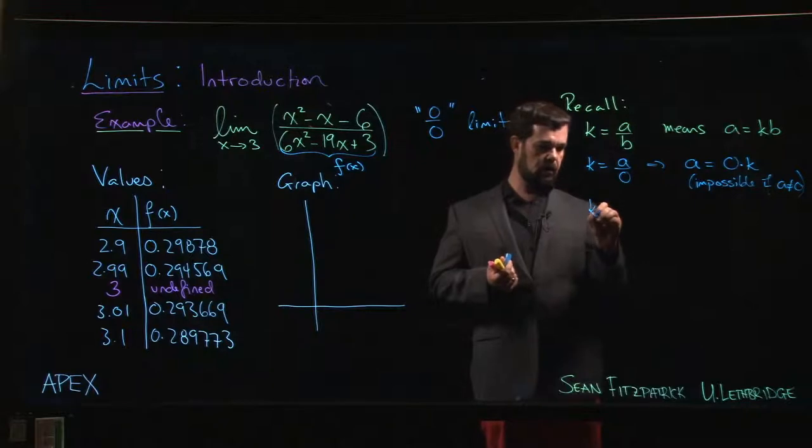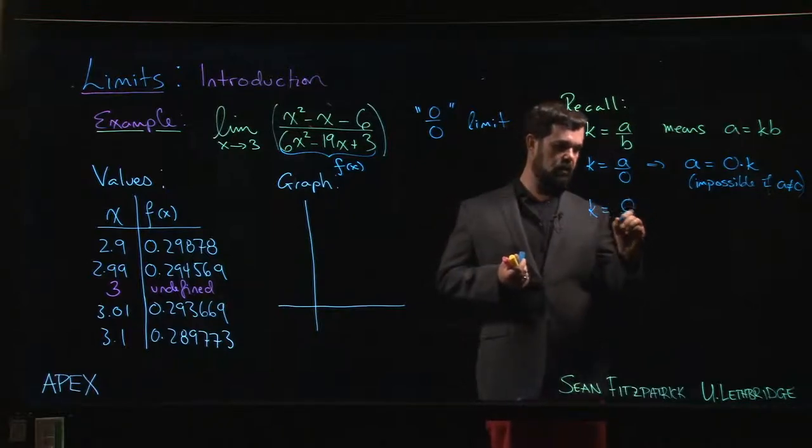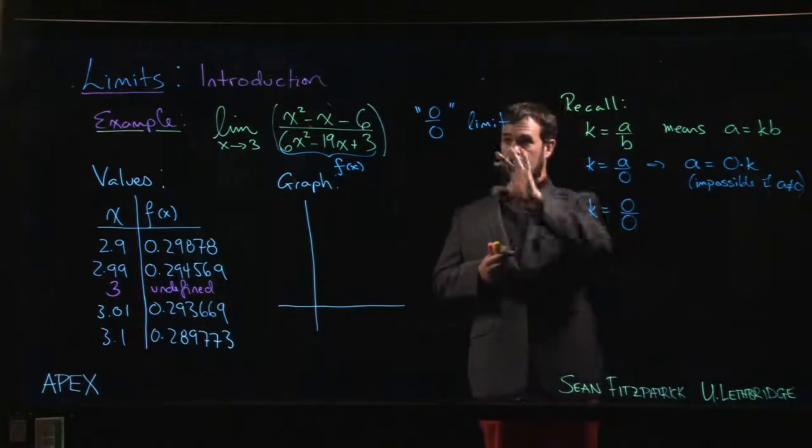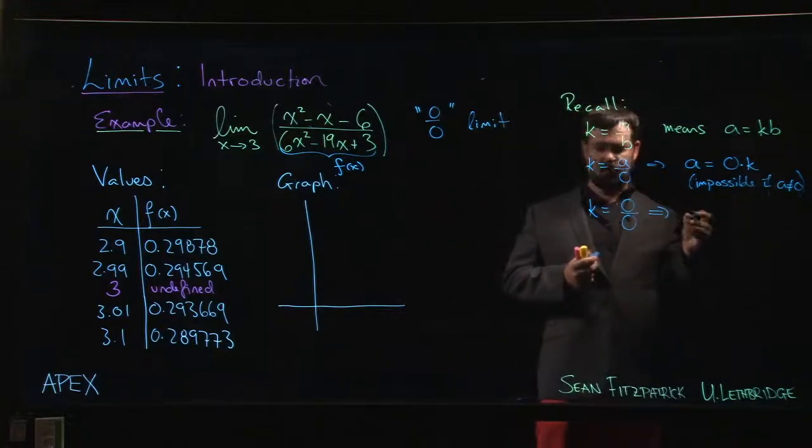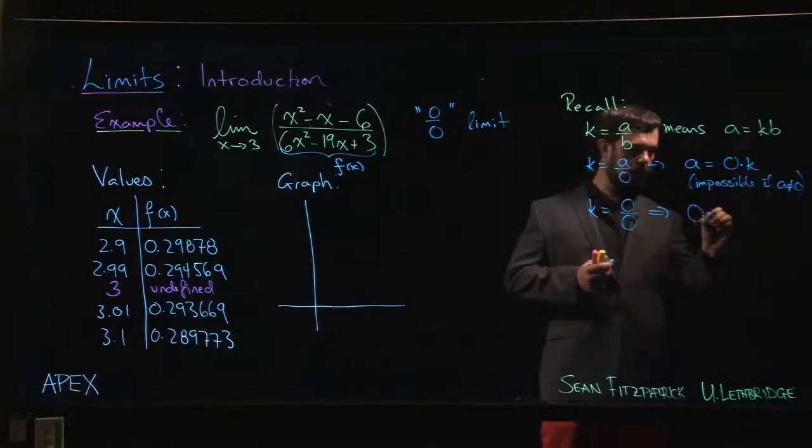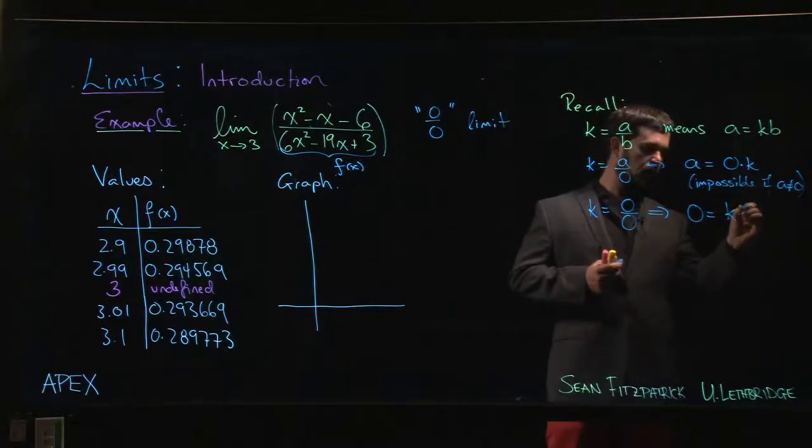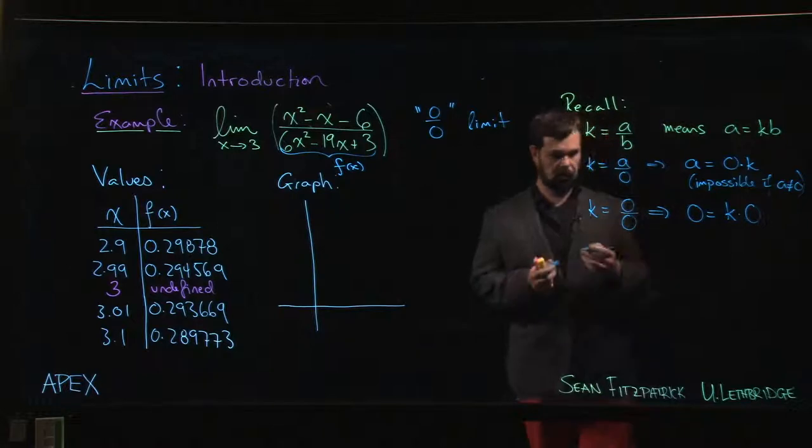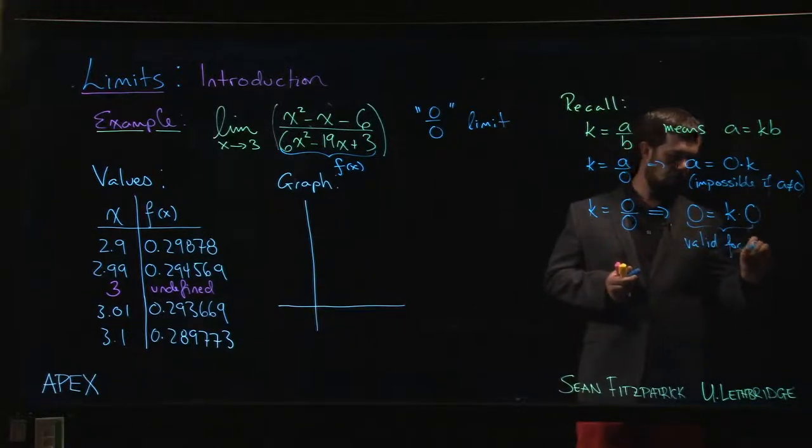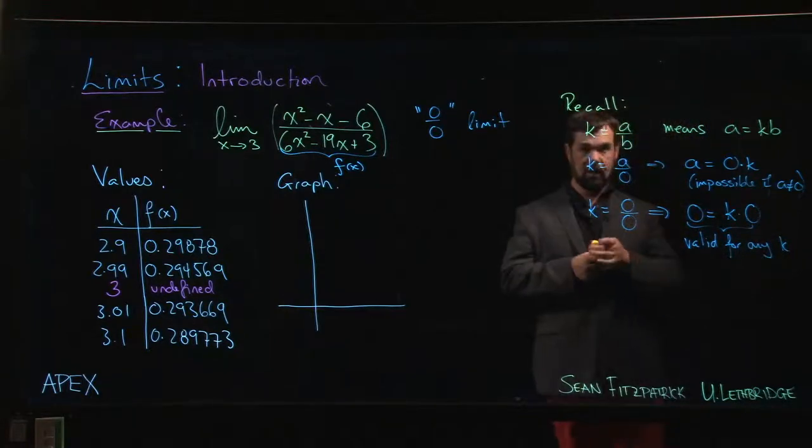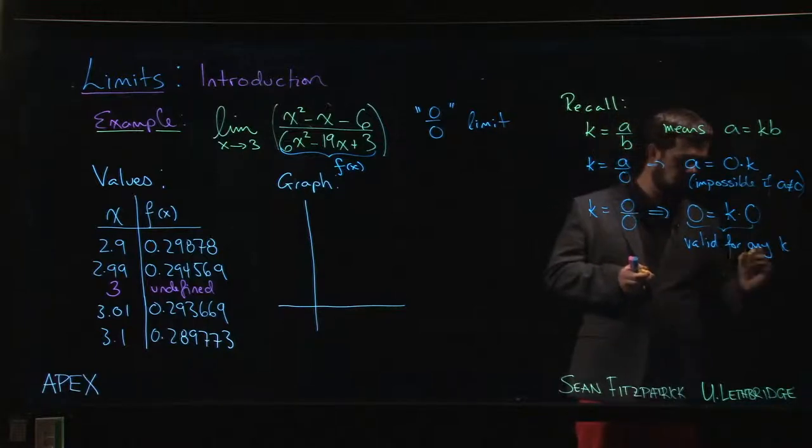On the other hand, if you had simply zero over zero, this indeterminate form, well then what that leads to is an equation that looks like zero equals k times zero, or zero times k. The trouble is that this is valid for any k.